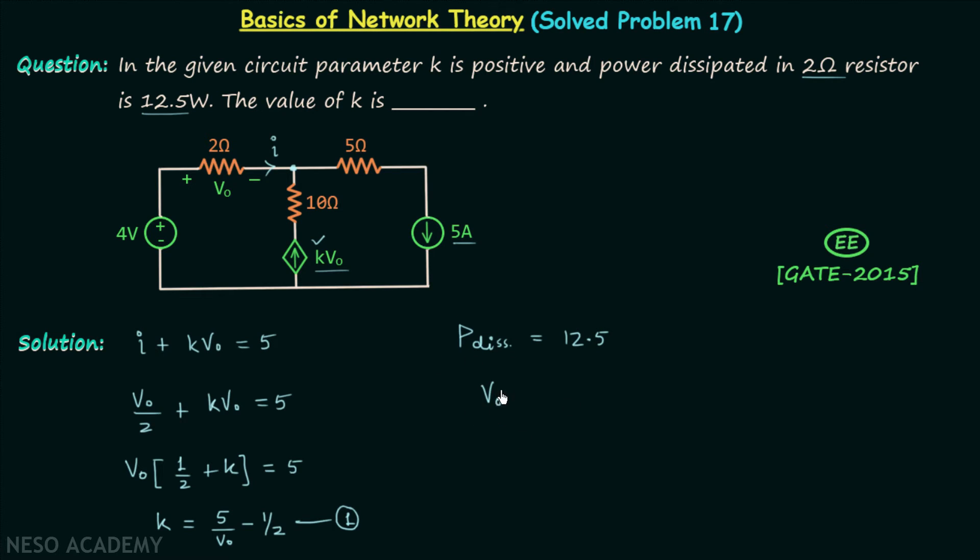And we know the power dissipated is equal to the square of the voltage across the resistor, which is v0, divided by the resistance, which is 2.